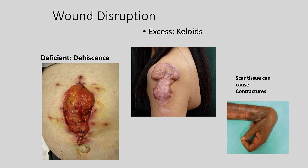Finally, scar tissue can cause contractures. Scar tissue over joints becomes so tight it can restrict movement of that joint — seen frequently in burn victims. You can see that when collagen formation occurred during wound closure, it pulled the joint excessively. Contractures can be released over time, but that requires surgical release, which creates a new wound disruption in tissue that had already healed.